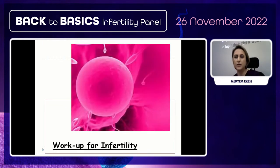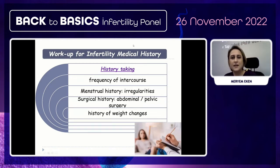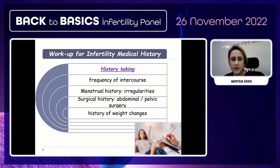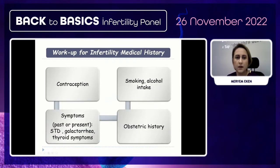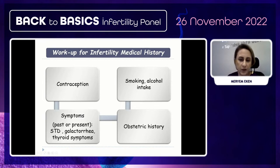For the workup for infertility, we first take a comprehensive history from both partners — frequency of intercourse, menstrual history, surgical history including abdominal or pelvic surgery, weight changes, contraception, smoking, alcohol intake, symptoms like galactorrhea, thyroid symptoms, and obstetric history.